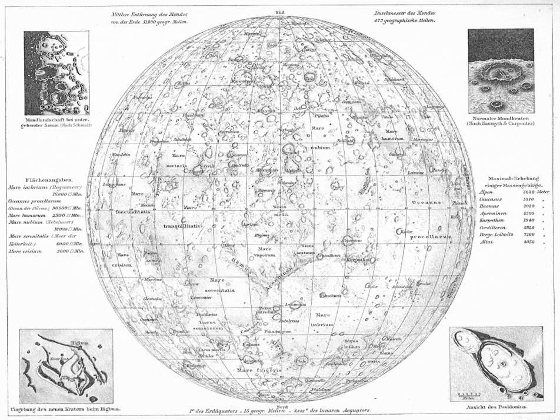When images are first obtained of the surface of a planet or satellite, a theme for naming features is chosen and a few important features are named, usually by members of the appropriate IAU task group.